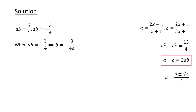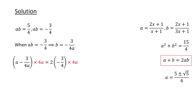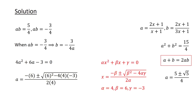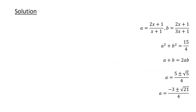For the case when ab equals minus 3 over 4, so b equals minus 3 over 4a, we get a minus 3 over 4a is equal to 2 times minus 3 over 4. Multiplying both sides by 4a to clear the denominators and rearranging, we get yet another quadratic equation. Another application of the quadratic formula, with alpha equals 4, beta equals 6, and gamma equals minus 3, gives us a equals minus 3 plus root 21 over 4 or a equals minus 3 minus root 21 over 4.